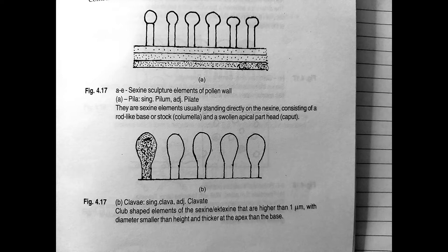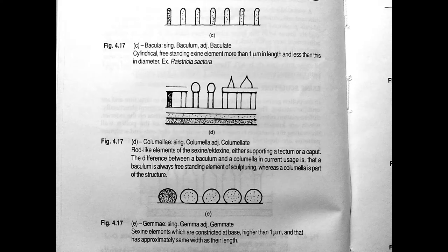Next we have baculate, columellate, and gemmate. In baculate type, these are cylindrical freestanding exine elements which are more than one micrometer in length and less than one micrometer in diameter. This is found in Ricinus communis.